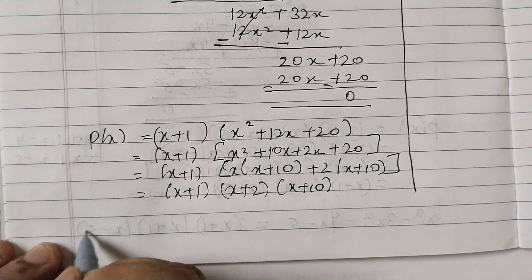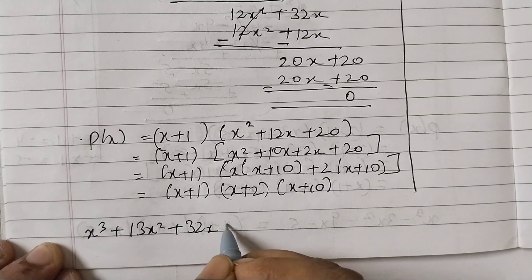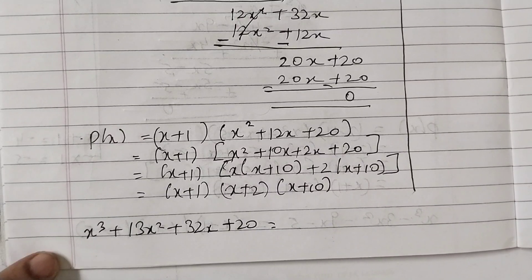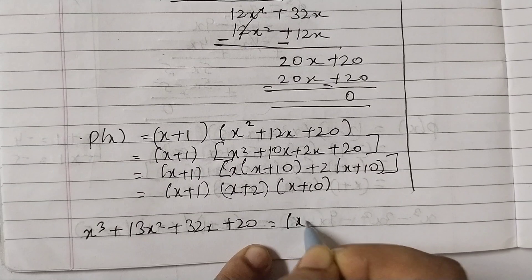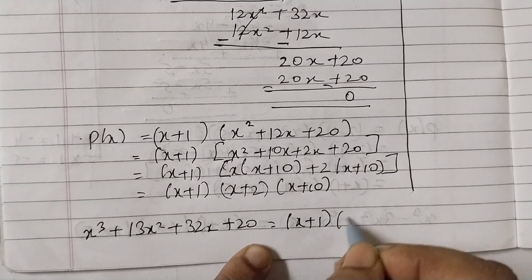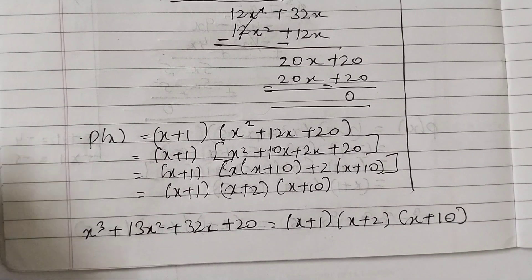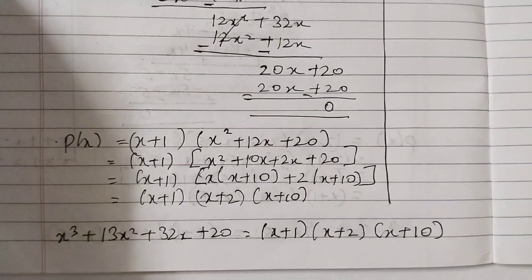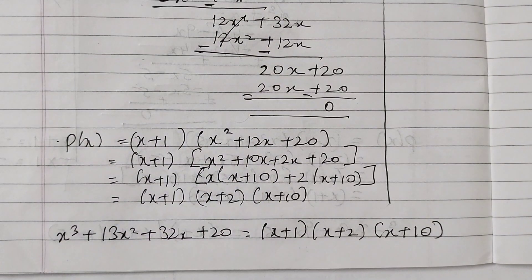So the final step: just write the polynomial equals all the factors, the product of the factors. x³ + 13x² + 32x + 20 = (x + 1)(x + 2)(x + 10). The same steps that we followed in part 1 and part 2, and by using that we got this answer.